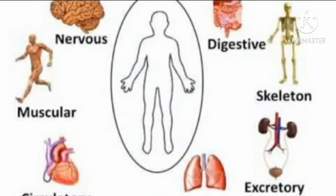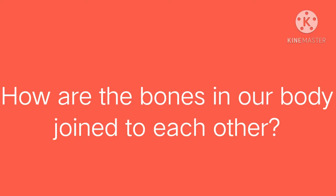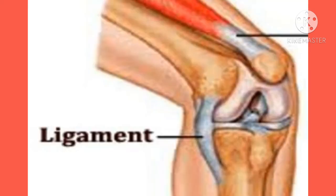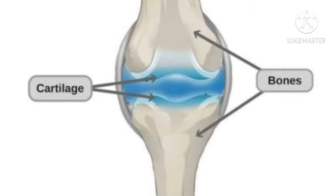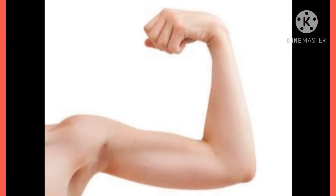Second question: how are the bones in our body joined to each other? Bones are connected to each other and joined together by tissues called ligaments. Another tissue, cartilage, is found between bones. Cartilage protects bones from rubbing against each other.